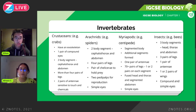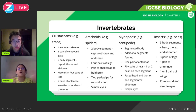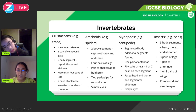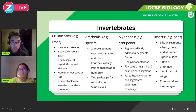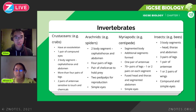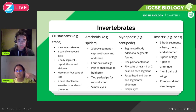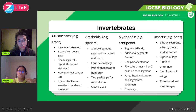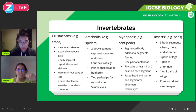Myriapods, like centipedes and millipedes, have a highly segmented body with many segments — too many to count individually. They have one pair of antennae — note this is different from crustaceans which have two pairs. They have more than 70 pairs of legs with two pairs on each segment. They have simple eyes. The key point for IGCSE is their highly segmented body with many legs.